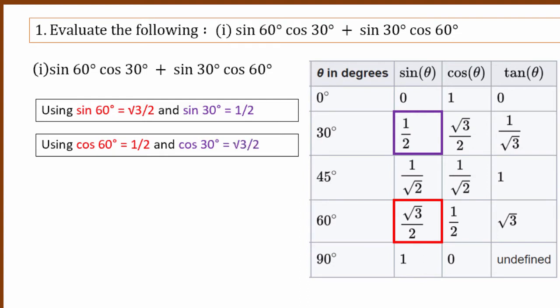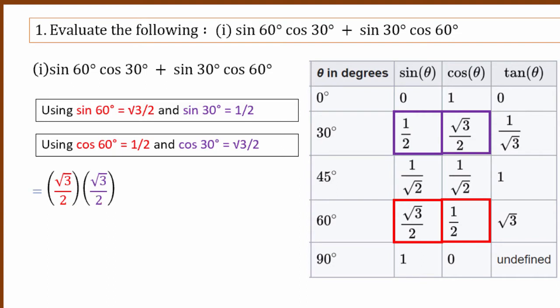Sin 30 degree is half, so the value is half. And cos 30 degree is root 3 by 2. We use the substitute method to simplify. So the first question's answer is 1.